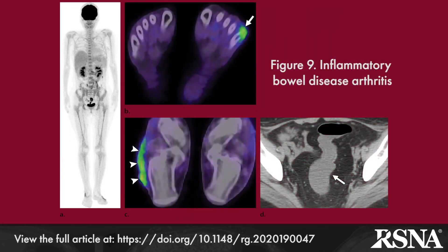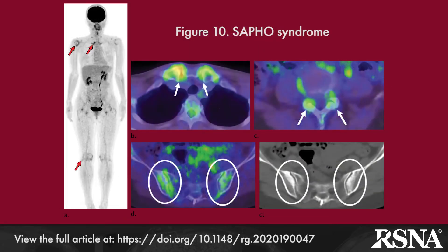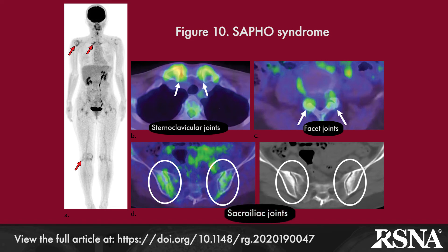Inflammatory bowel disease arthritis, which is similar to ankylosing spondylitis, and SAPHO syndrome — which stands for synovitis, acne, pustulosis, hyperostosis, and osteitis — which predominantly affects the anterior chest wall, are illustrated in Figures 9 and 10, respectively.